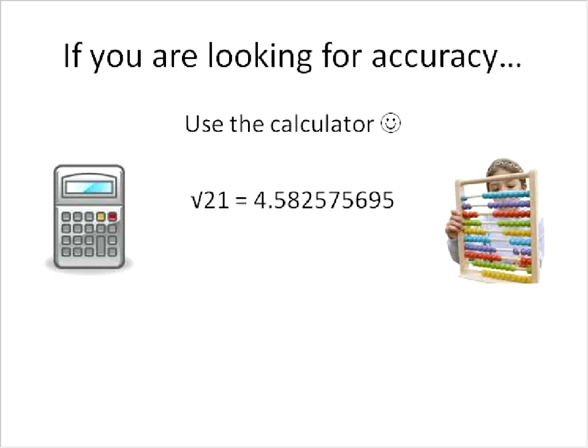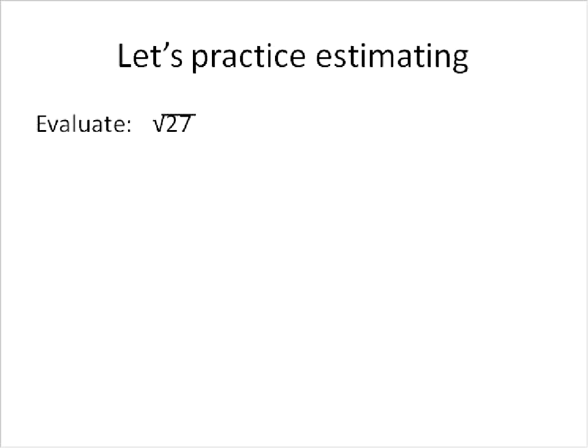Oh, first off, if we use the calculator, we find that the square root of 21 is 4.5825. So we were about, this is just a way to check for accuracy. It's even more accurate than the abacus.